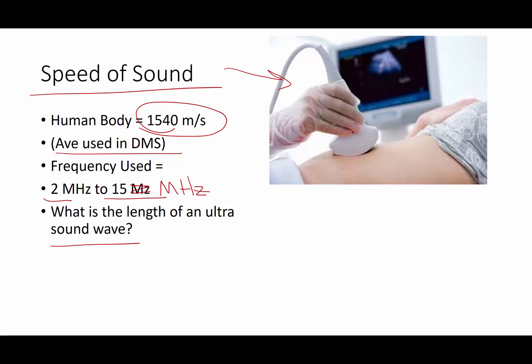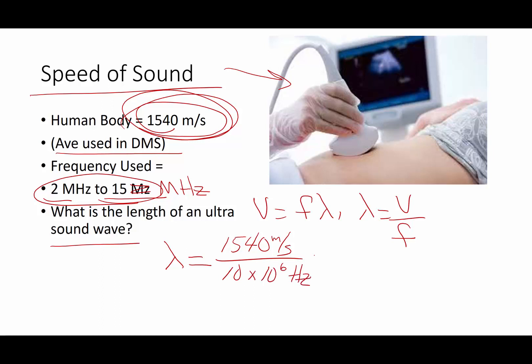So what's the length of an ultrasound wave? Well, let's go ahead and do this calculation. Velocity is frequency times wavelength. So wavelength is going to be velocity divided by frequency. So wavelength is going to be velocity inside the human body, 1540 meters per second. Which one of these am I going to choose? Well, I'm going to randomly choose 10 megahertz. Mega is 10 to the 6th hertz. And if I do the math, I end up with 1.54 times 10 to the negative 4 meters.